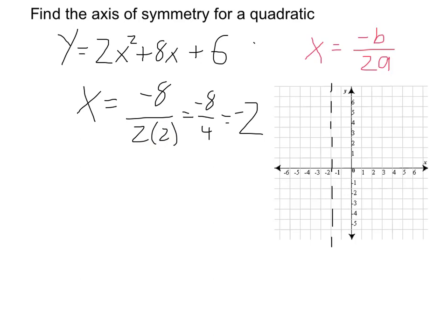I can represent that with a dotted line over here. Then, if I want to find the vertex, I can plug in the x value that I used to find the axis of symmetry into my original equation.